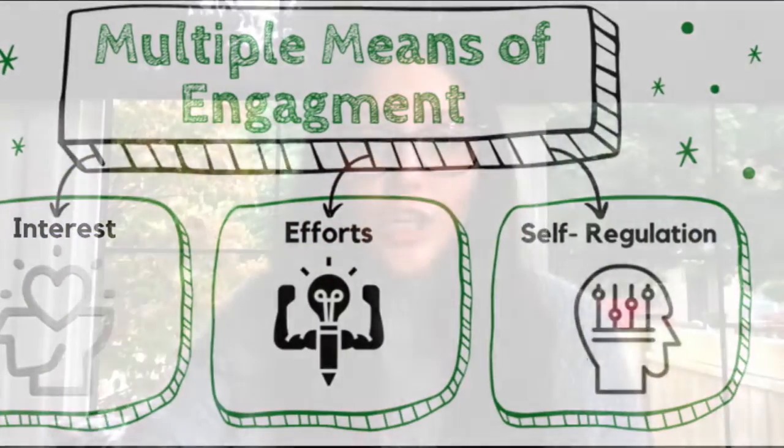This guideline mentions that to recruit interest in students we must minimize threats and distractions in our classroom. One way to accomplish this is the creation of stable classroom routines such as charts, calendars, schedules, visual timers, and cues — anything that can increase predictability of daily activities and transitions. We believe that a classroom routine includes effective classroom management techniques that fit the need of all learners.